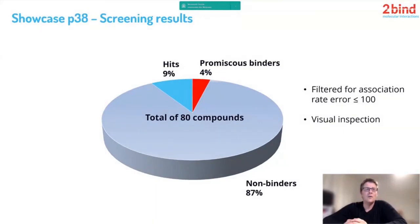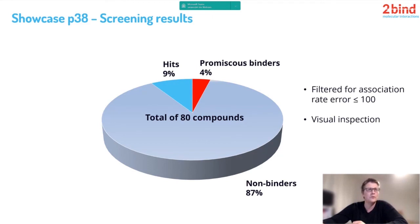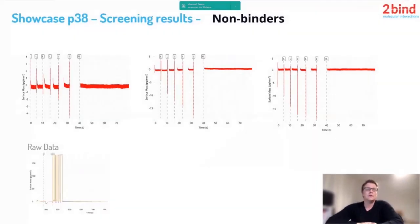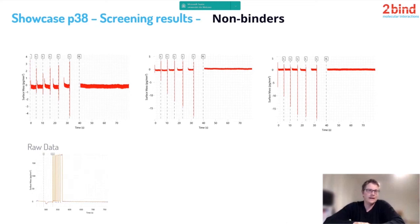Out of these 80 compounds, we found 87% non-binders, 4% promiscuous binders, and 9% hits. Let me walk through examples of each category. Starting with non-binders: three examples are shown, with WaveRapid data on top and raw data below. In none of them is any dissociation visible, meaning there is no binding.